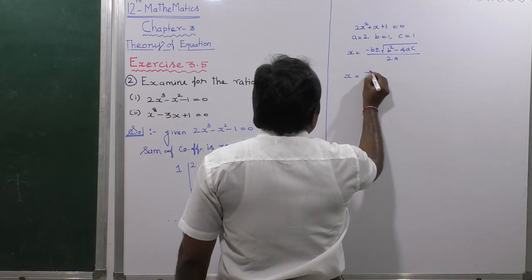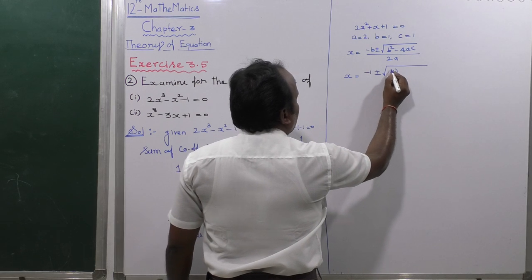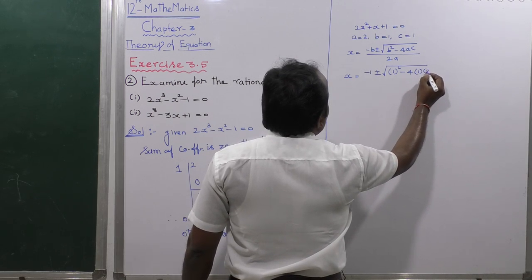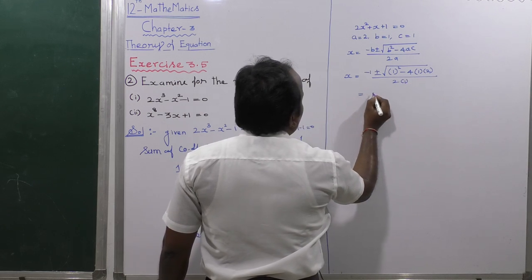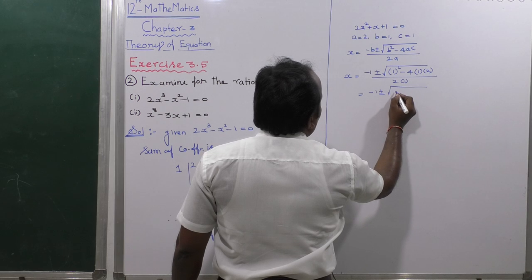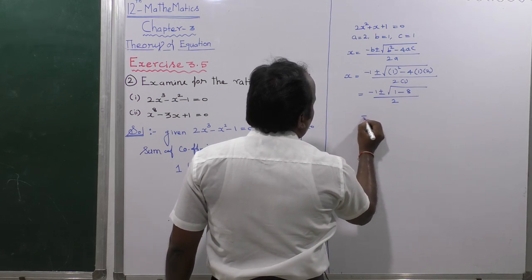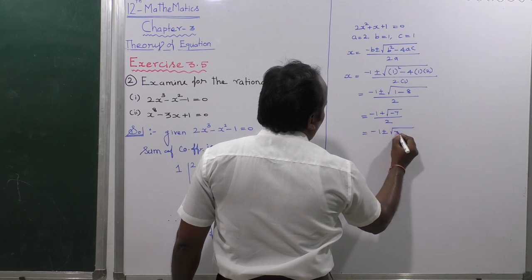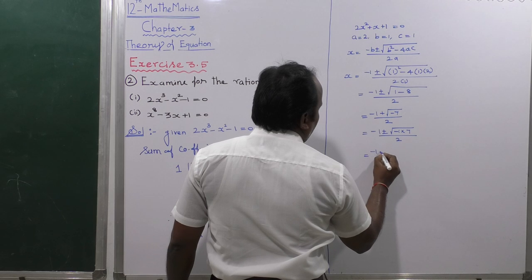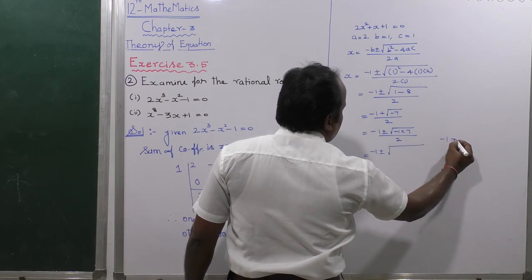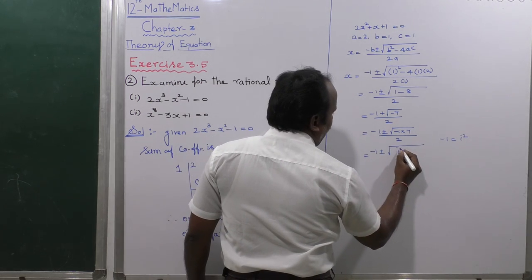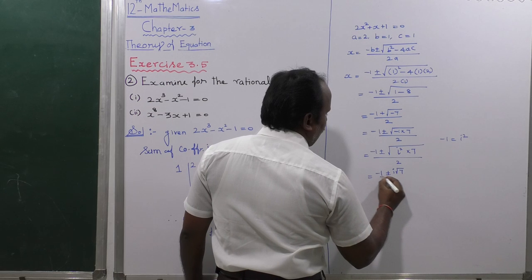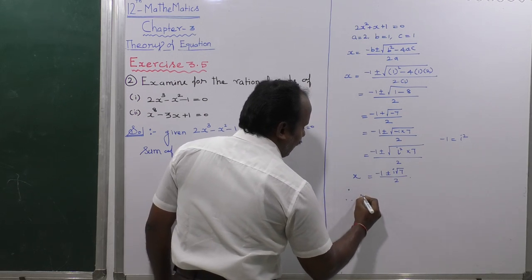So x equals minus 1 plus or minus the square root of 1² minus 4 times 2 times 1, all divided by 2 times 1. That gives minus 1 plus or minus the square root of 1 minus 8, divided by 2, which is minus 1 plus or minus the square root of minus 7, divided by 2. Since minus 1 equals i², this becomes minus 1 plus or minus i√7, divided by 2, giving a complex number result.